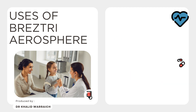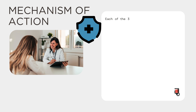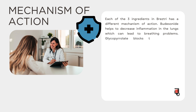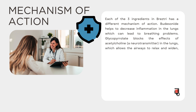Mechanism of Action. Each of the three ingredients in Breztri has a different mechanism of action. Budesonide helps to decrease inflammation in the lungs, which can lead to breathing problems. Glycopyrrolate blocks the effects of acetylcholine in the lungs, which allows the airways to relax and widen, making breathing easier.